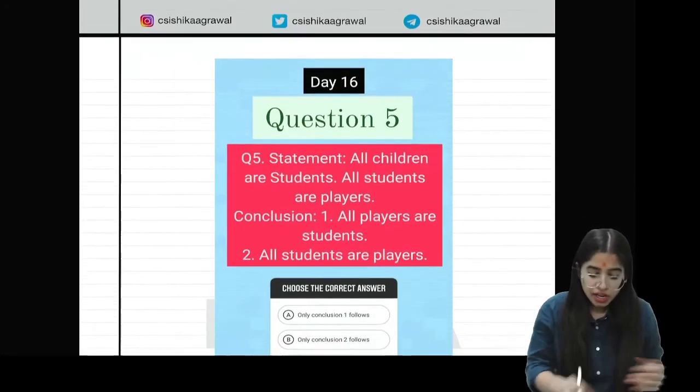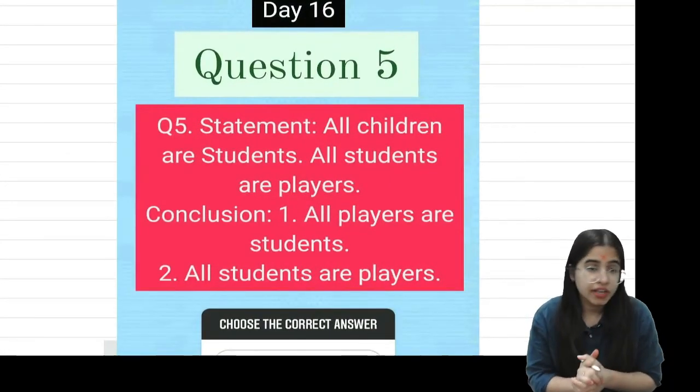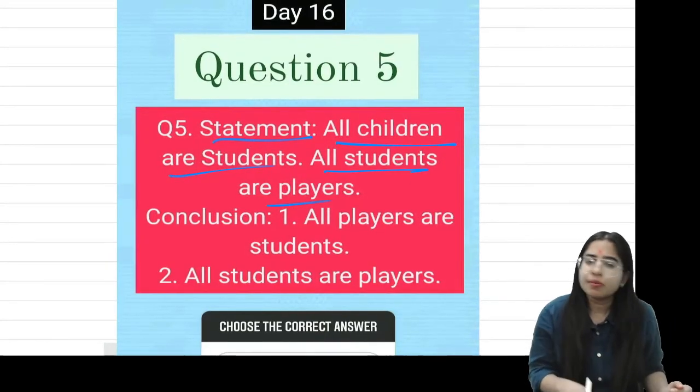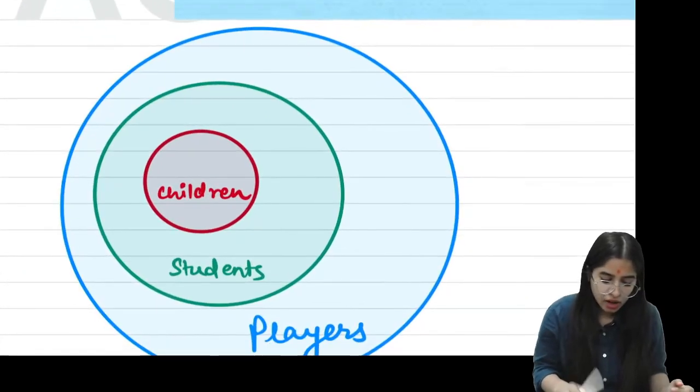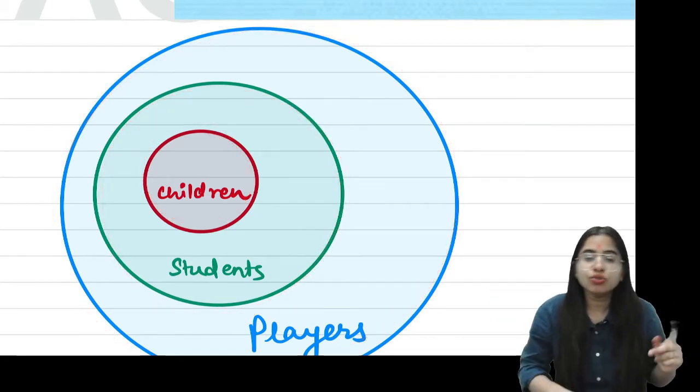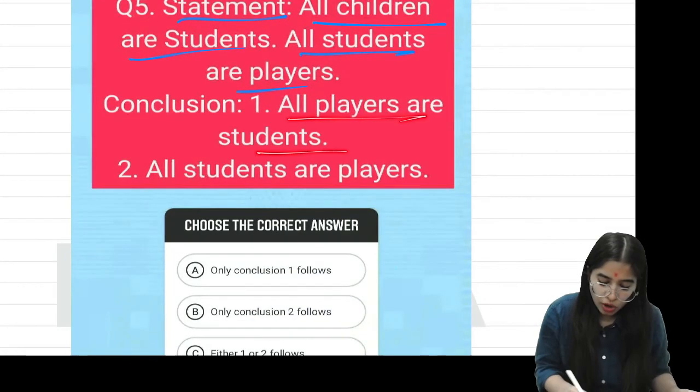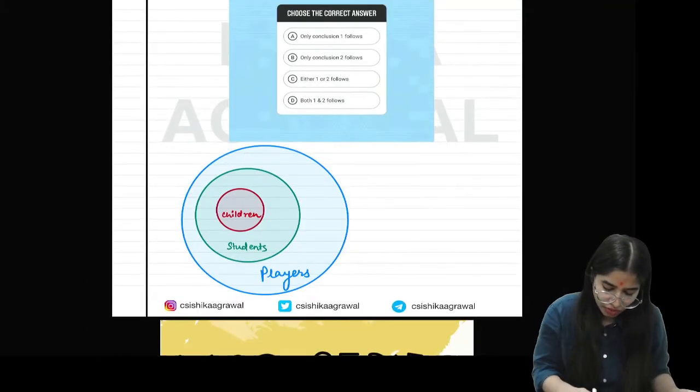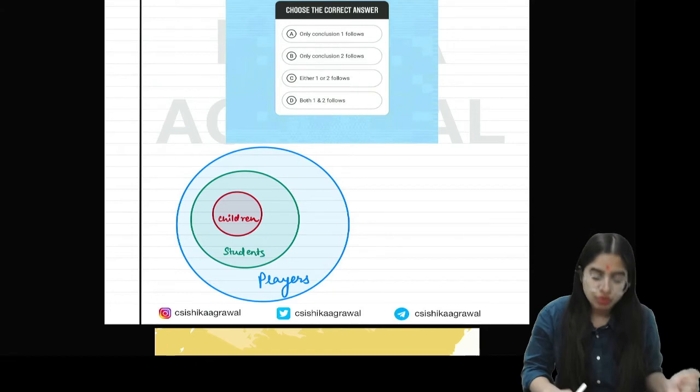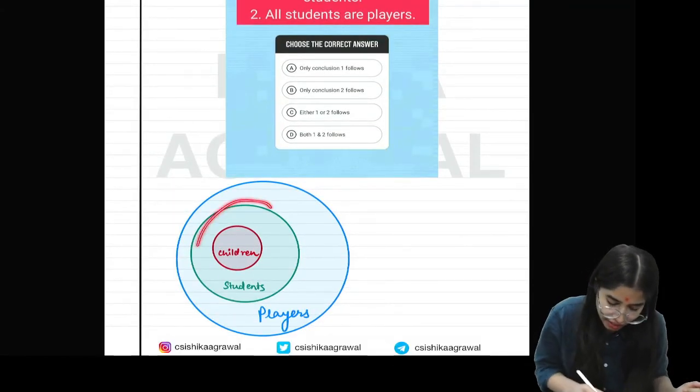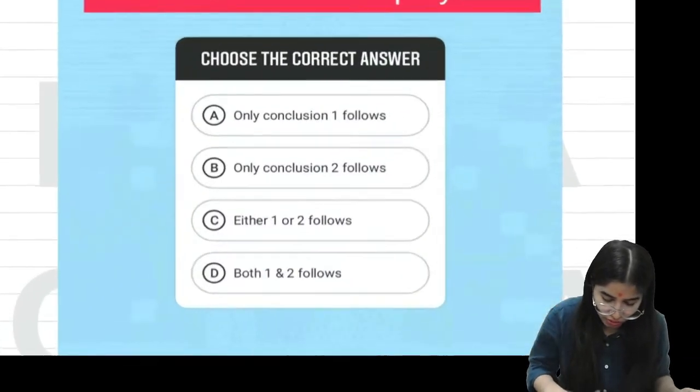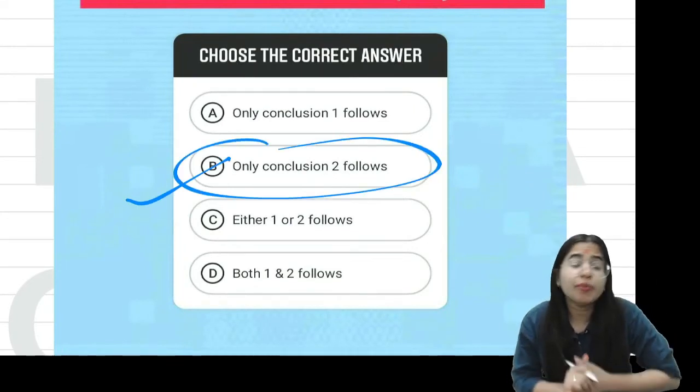I hope everybody is crystal clear. Let's see the last question of today's video. The last syllogism question is on your screen, and the question is: two statements are given - all children are students, and all students are players.